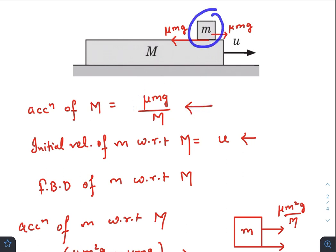Initial velocity of m with respect to capital M would be u towards right, because capital M itself was moving towards right and small m was at rest. So with respect to capital M, velocity of small m will be u towards left.